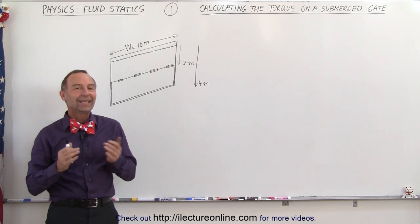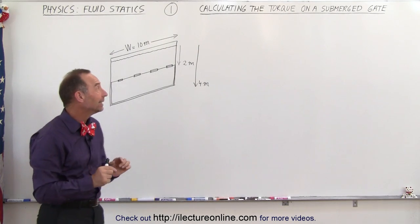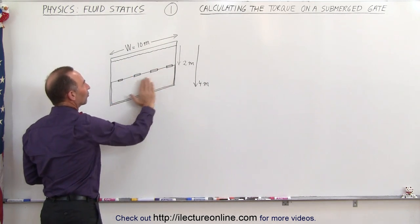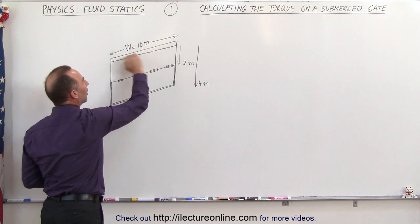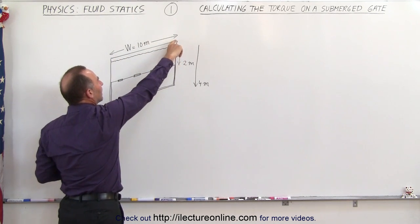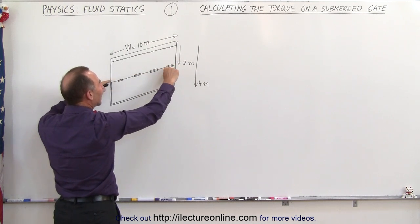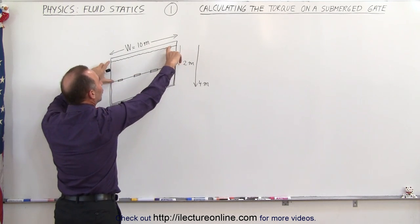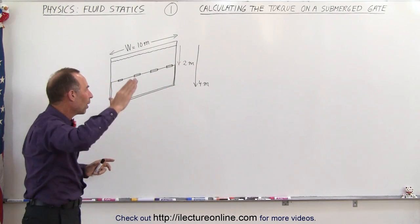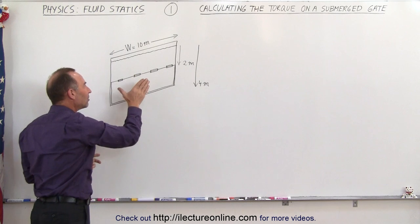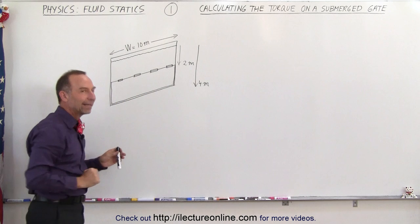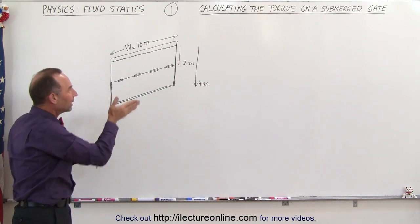Welcome to Electron Line. In this example, what we're trying to find is the torque acting on the gate. This is a wall that's submerged — the water level goes all the way to the top. The wall is 10 meters wide. The top of the gate, where the hinges are, is 2 meters below the water line, and the bottom of the gate is 4 meters below the water line. The water is going to be pushing against the gate, and therefore there's going to be a resulting torque trying to open the gate up.